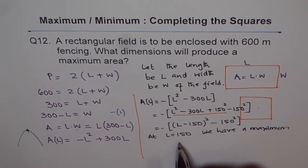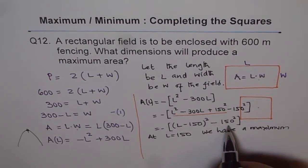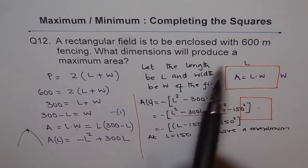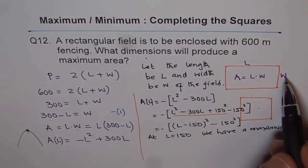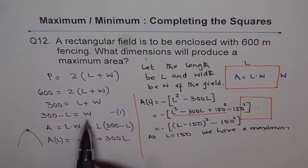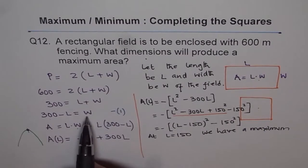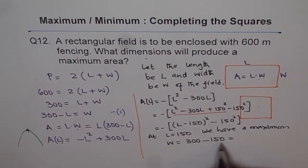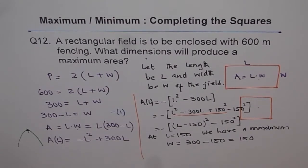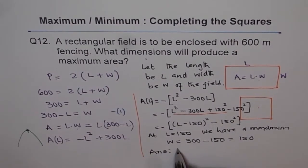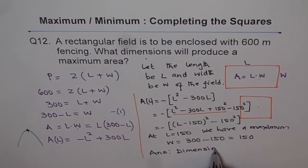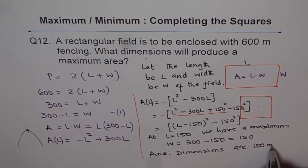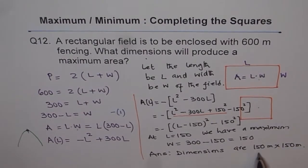Therefore, the area is maximum when length is 150. We don't even need to calculate further — the answer is right there. The question asks for dimensions, so we need both length and width. We know length is 150. Going back to equation number 1: width equals 300 minus length equals 300 minus 150, which is also 150. The dimensions are 150 meters by 150 meters.